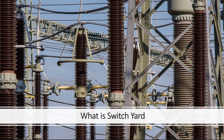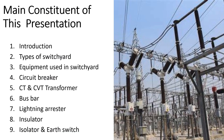Today I am talking about Switchyard in Electrical Power System. I will discuss its various elements and their functions in this presentation. The main constituents of this presentation are: Introduction, Types of Switchyard, Equipment used in Switchyard, Circuit Breaker, CT and CVT, Transformer, Bus Bar, Lightning Arrester, Insulator, Isolator, and Earth Switch.